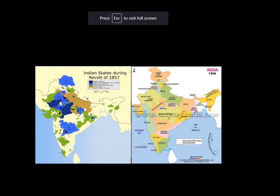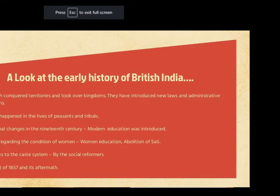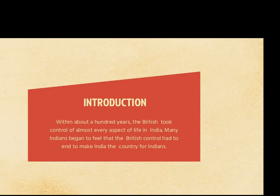This is a map of the Indian state during the revolt of 1857 and in the year 1956. We have already discussed that the caste system was challenged by many social reformers, and we have also talked about the revolt of 1857 and the condition of the regions and the tribals. Within about a hundred years, the British took control of almost every aspect of life in India, and many Indians had now started to feel that British control had to end — that India was for the Indians.